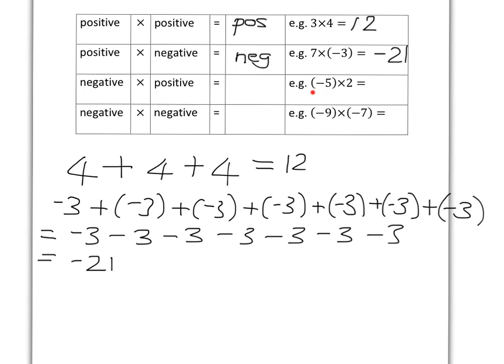Now, the next one follows straight away. Negative 5 times 2 is exactly the same as 2 times negative 5 because with multiplication, the order doesn't matter. We can always switch it around. So it's 2 lots of negative 5, and we've just seen that's going to give you a negative answer. So negative 5 multiplied by 2 gives you negative 10.